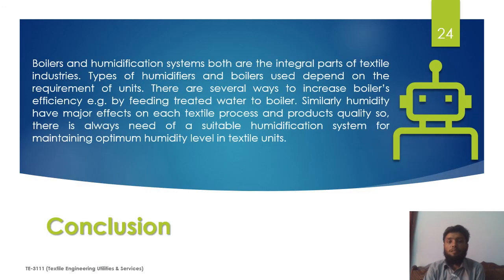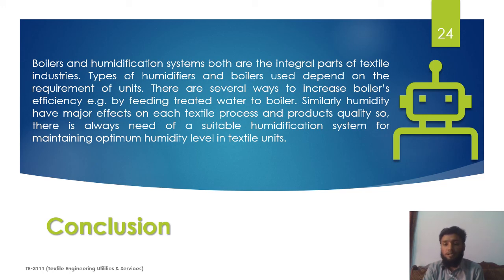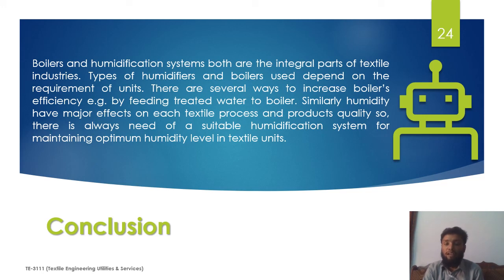In conclusion, boilers and humidification systems are integral parts of any textile unit, and textile units cannot operate without them as production quality is affected. If boilers are used with proper mountings and accessories, boiler efficiency can be improved, which will directly affect the efficiency of textile units. Similarly, if the humidification system is proper, the quality of goods will be proper; if it is not, product quality will also be affected.